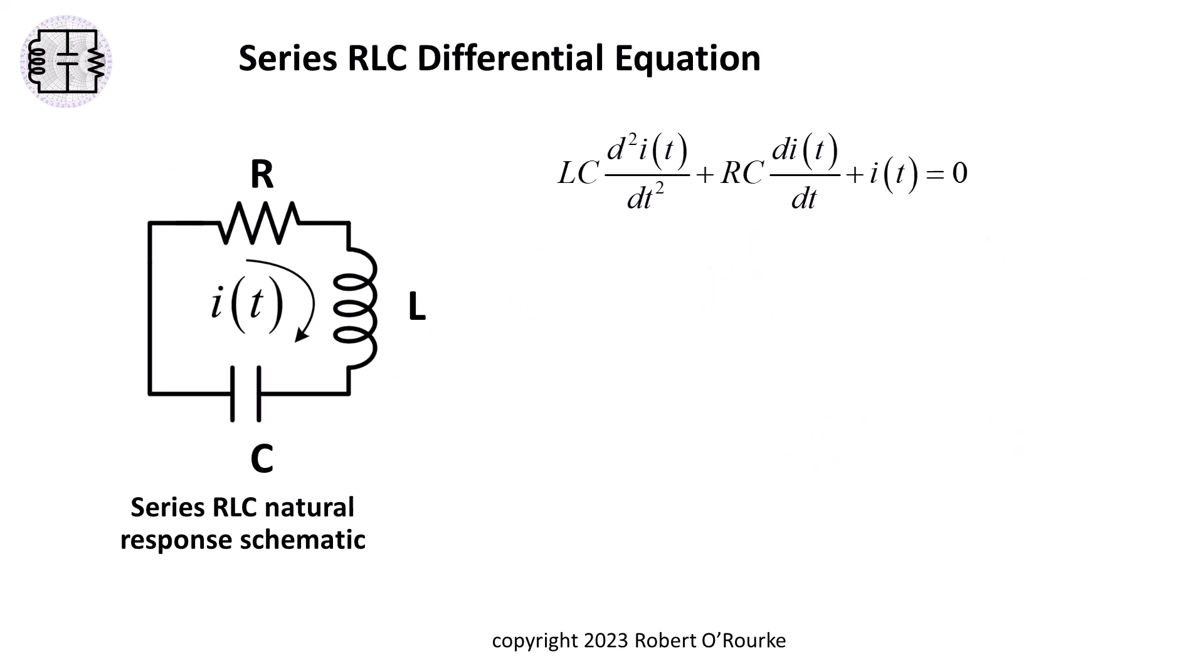This equation describes the natural response of the series RLC circuit, but how do we get from the circuit to the differential equation?